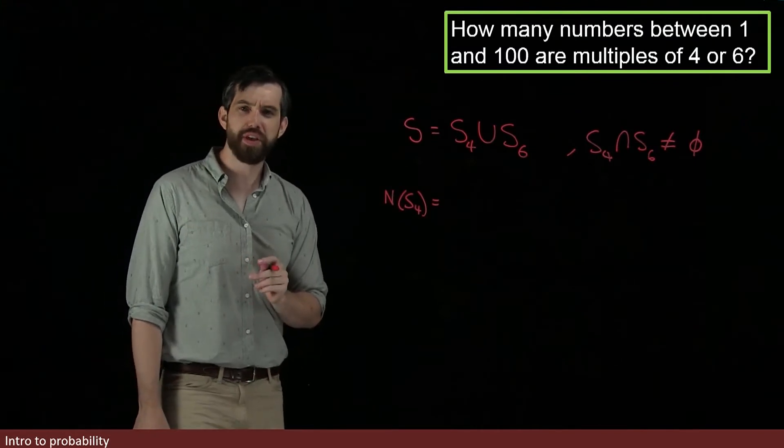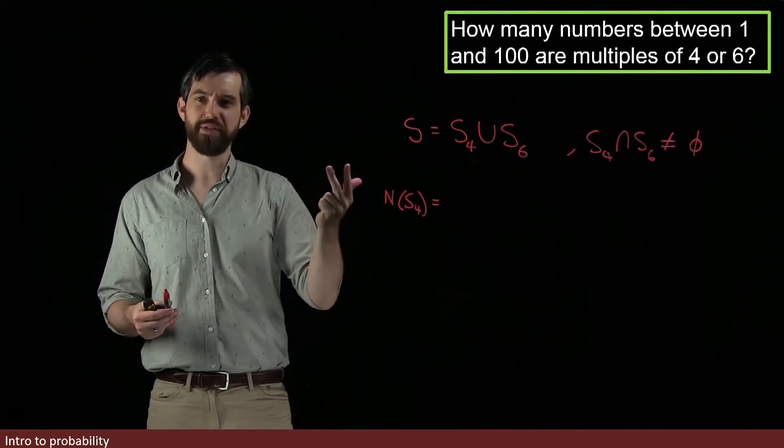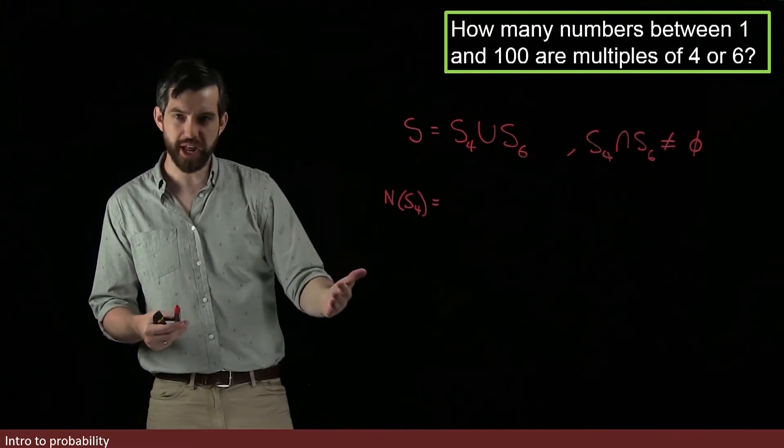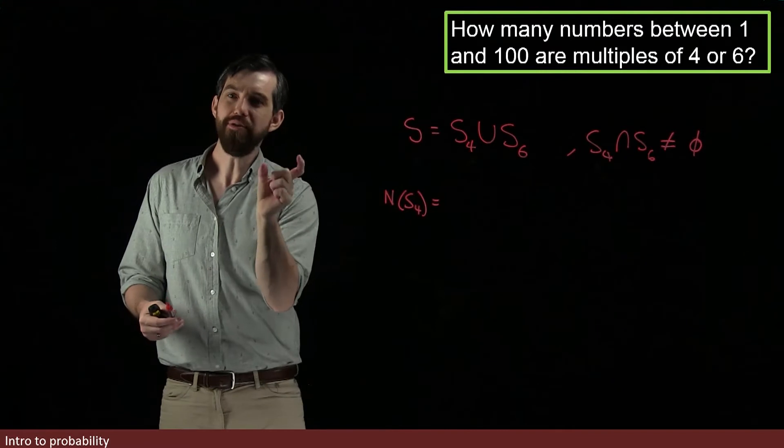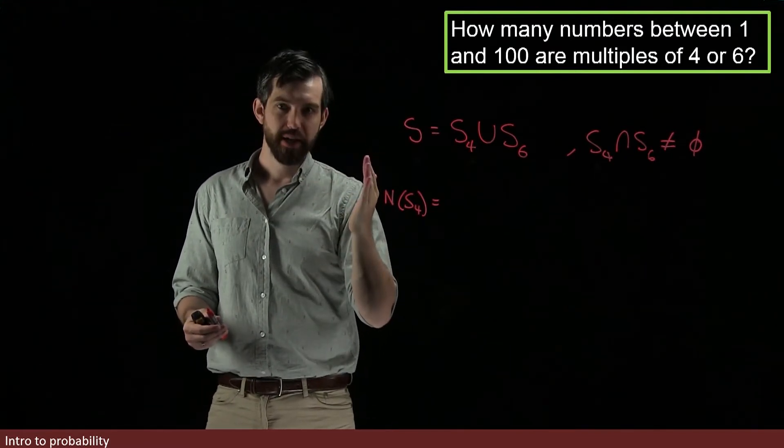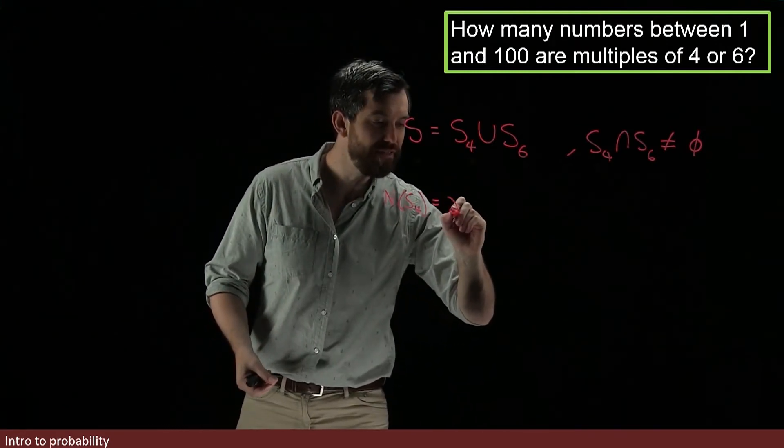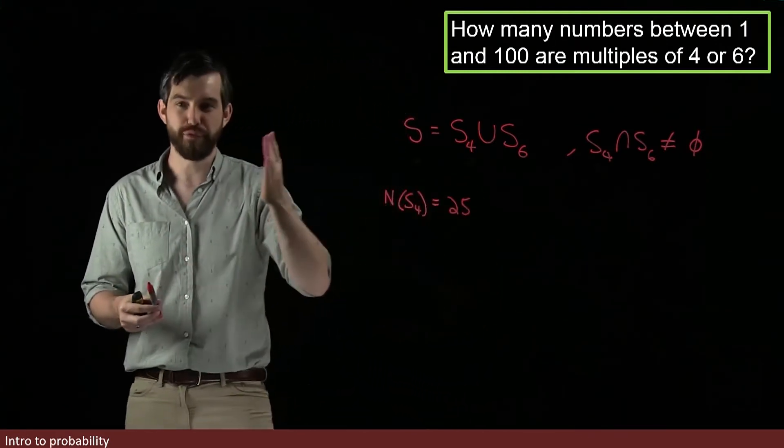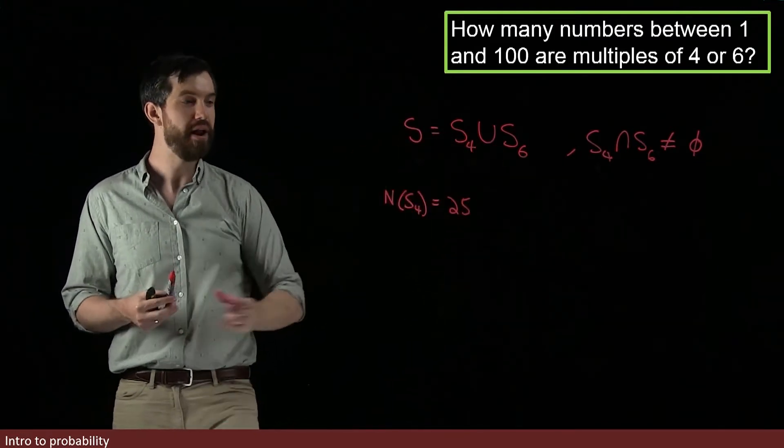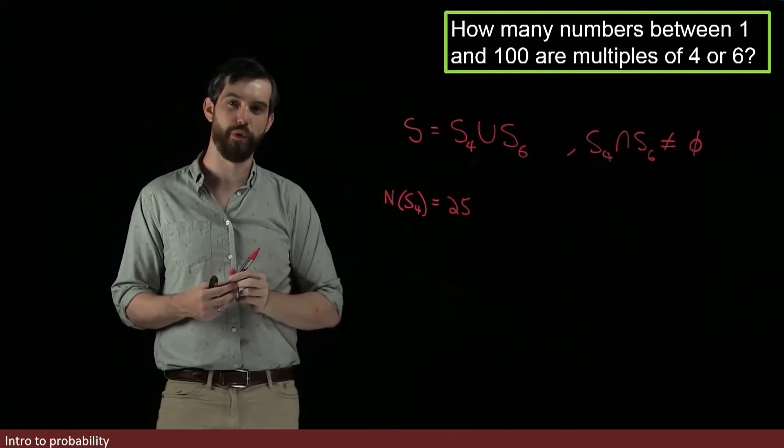Well, I know that if I think about multiples of 4, okay, so 4, 8, 12, 16, and so on. So, 4 times 1, 4 times 2, 4 times 3. 100 exactly is 4 times 25. So, I believe that the possibility is going to be 25 cases. All the way from 4 times 1 up to 4 times 25, which is exactly equal to 100. 25 different numbers between 1 and 100 that are multiples of 4.